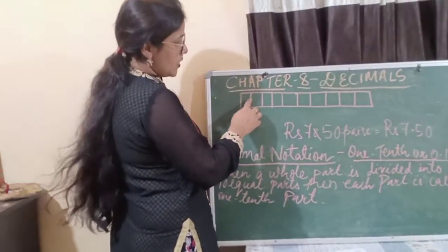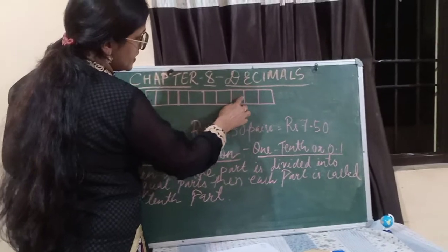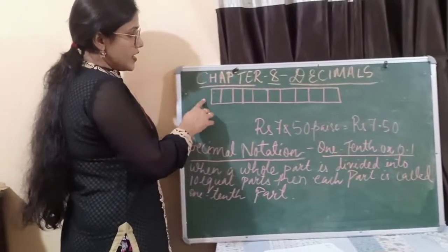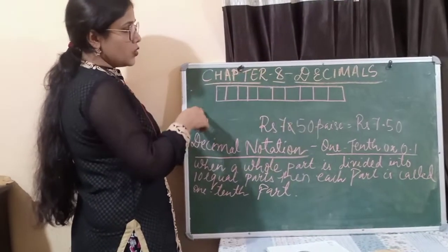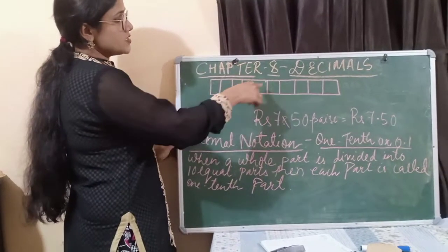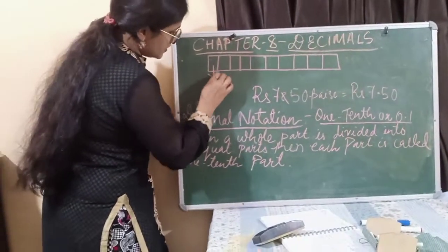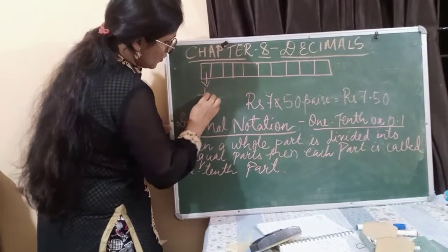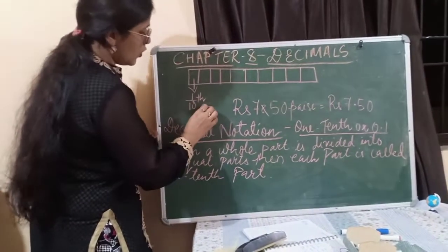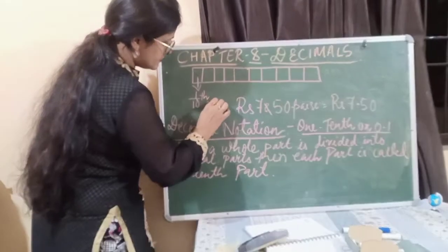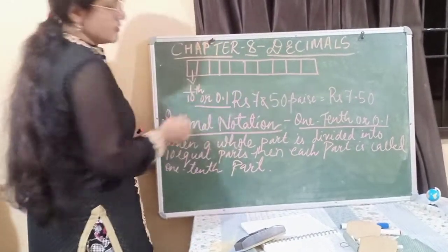Can you see this? 1, 2, 3, 4, 5, 6, 7, 8, 9, and 10. So I divided this rectangle, which was a whole, into 10 parts. So each part is called the 1/10 part, or 0.1.